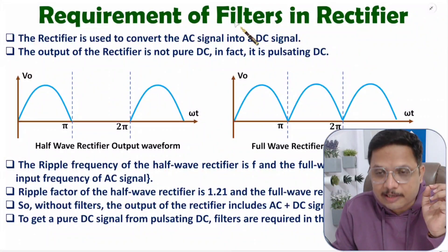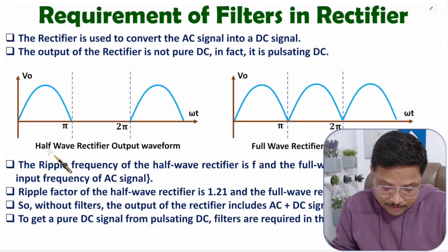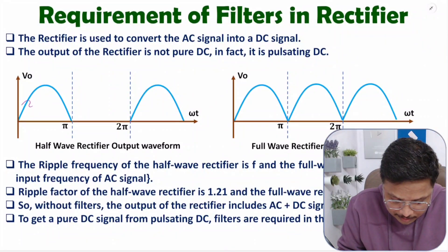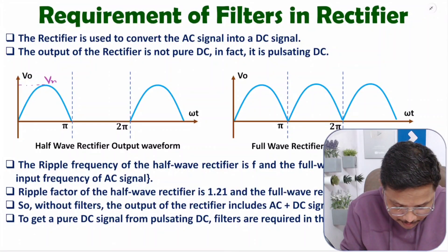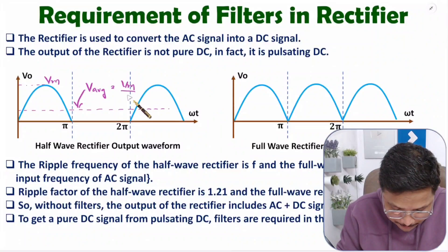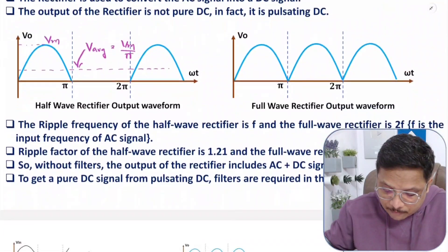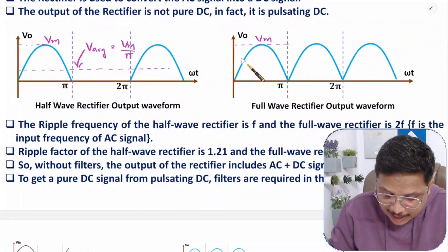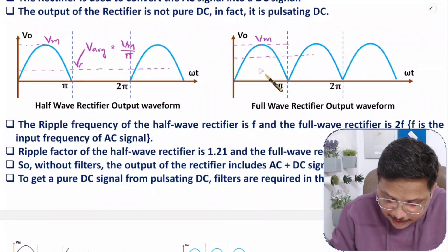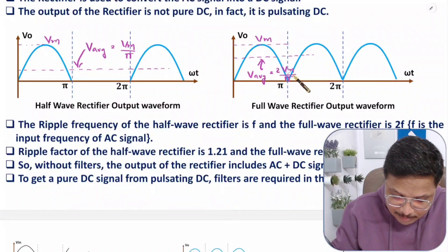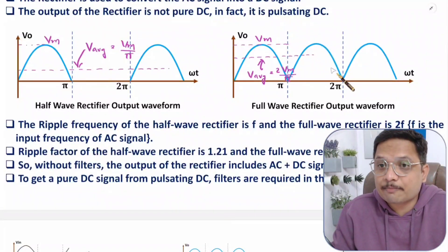To have pure DC signal, we can only achieve that with the use of filters. If you talk about half-wave rectifier average DC output, that will be Vm/π, where Vm is the maximum voltage. In case of full-wave rectifier, the average DC will be 2Vm/π — double that of the half-wave — but still this signal is pulsating DC.